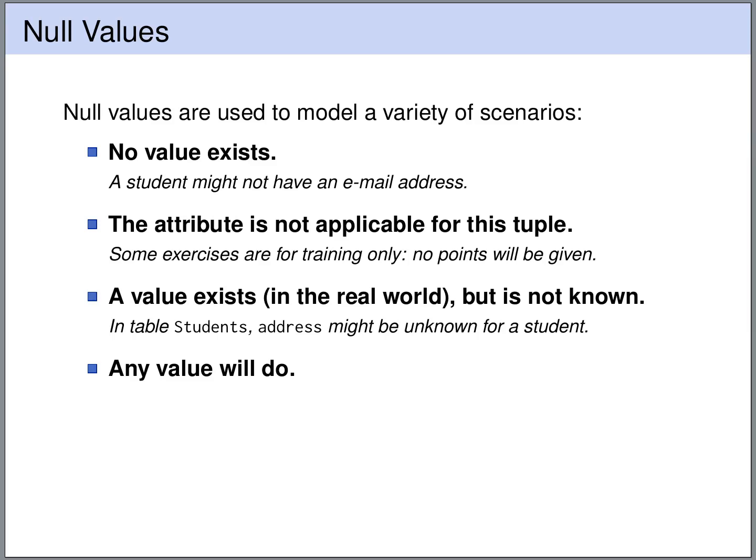And NULL values can also be used to indicate that a certain attribute is not at all applicable for a particular tuple. For instance, we may have exercises that are for training purposes only and that will not be graded. And finally, we can use NULL values to indicate that any value will do. So we don't care what value will be filled into this place.